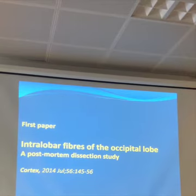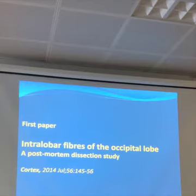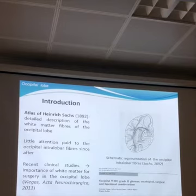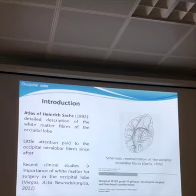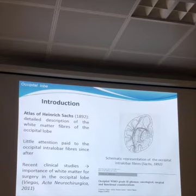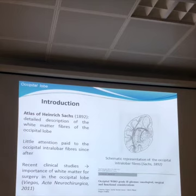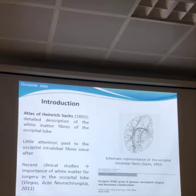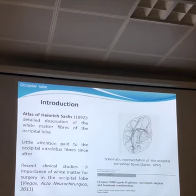The first study, done in collaboration with Stephanie, investigated the interlober fibers of the occipital lobe. The first complete description of the white matter fibers of the occipital lobe was provided by Heinrich Sachs in 1892, but very little attention was paid since. Despite the clinical relevance these connections may have, the occipital lobe — apart from the primary visual area and optic radiation — has always been considered relatively non-eloquent, particularly by clinicians. Recent clinical studies and neurosurgical publications have underlined the importance of white matter anatomy here.